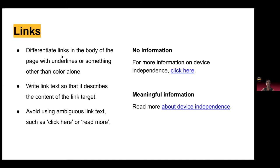For links, differentiate links in the body of the page with underlines or something other than color alone, since people with low vision or color blindness might not be able to perceive link text from body text. Link text should describe the content of the link target — avoid using things like 'click here' or 'read more.' One thing I've been trying to do is make link text more meaningful in my own work and even in emails, instead of just saying 'click here' or putting a bare URL.